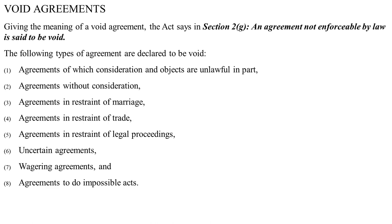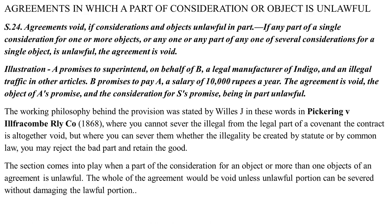Starting with Section 24, which deals with agreements void if considerations and objects are unlawful in part: if any part of a single consideration for one or more objects, or any part of any one of several considerations for a single object, is unlawful, the agreement is void. Its illustration says A promises to superintend on behalf of B a legal manufacture of indigo and an illegal traffic in other articles. B promises to pay A a salary of Rs. 10,000 a year. The agreement is void because the object of A's promise and the consideration for B's promise are in part unlawful.